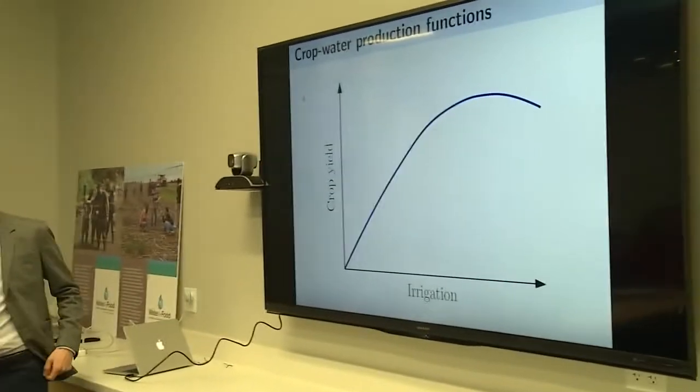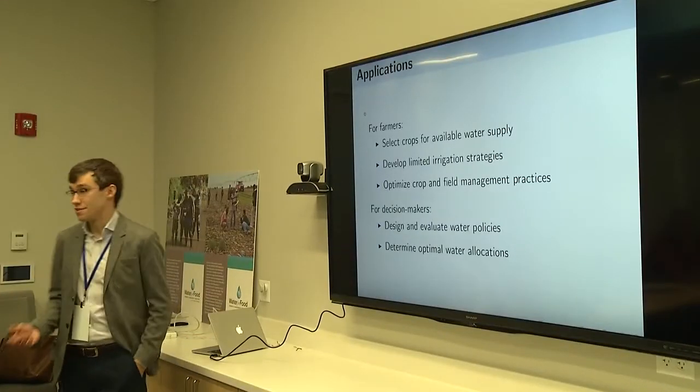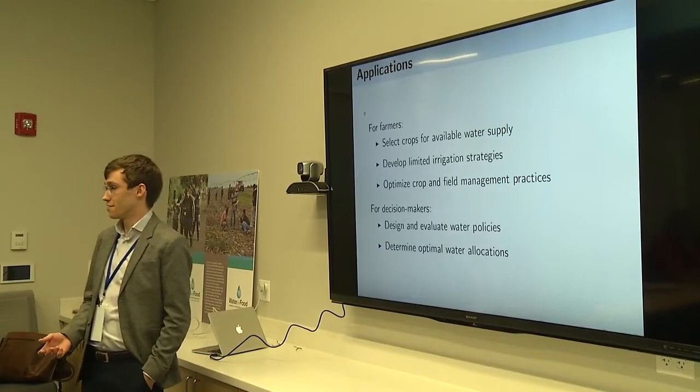This is really what we're going to be focusing on — how we use crop simulation models to generate this kind of output: the response of yield to water. This output is really what we need for a number of purposes. It's useful for farmers who want to decide, given a certain amount of water, which crop to use it on, how much to apply, and what level of deficit irrigation to do. By looking at how the production function changes with different management practices, we can see how adopting those practices might benefit us when water availability is limited.